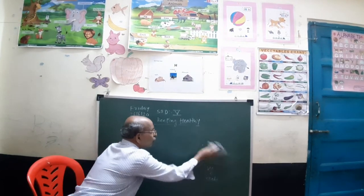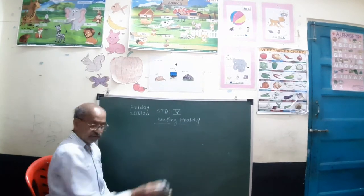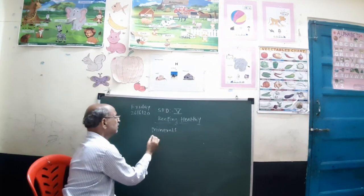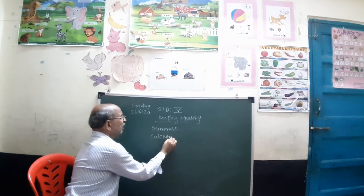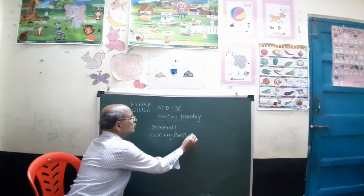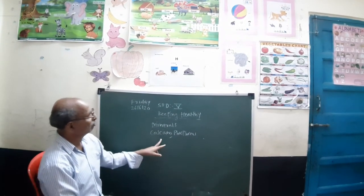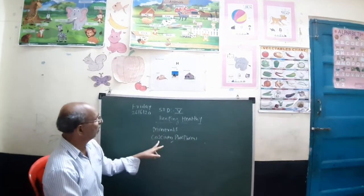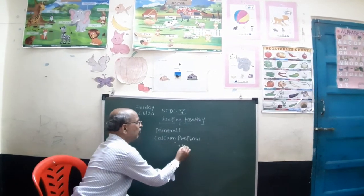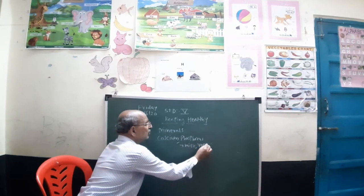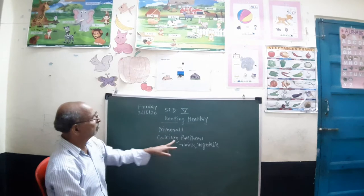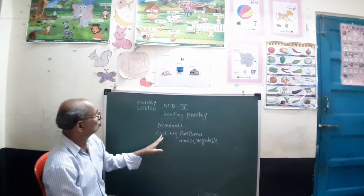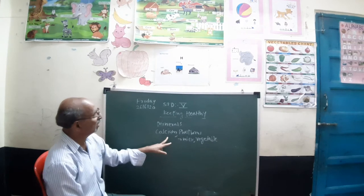We also require some minerals. The first important minerals are calcium and phosphorus. These two minerals are very important because our bones and teeth are made up of calcium and phosphorus. We mainly get calcium and phosphorus from milk and vegetables. If we have a lack of calcium and phosphorus, our teeth do not develop properly and our bones become very brittle.